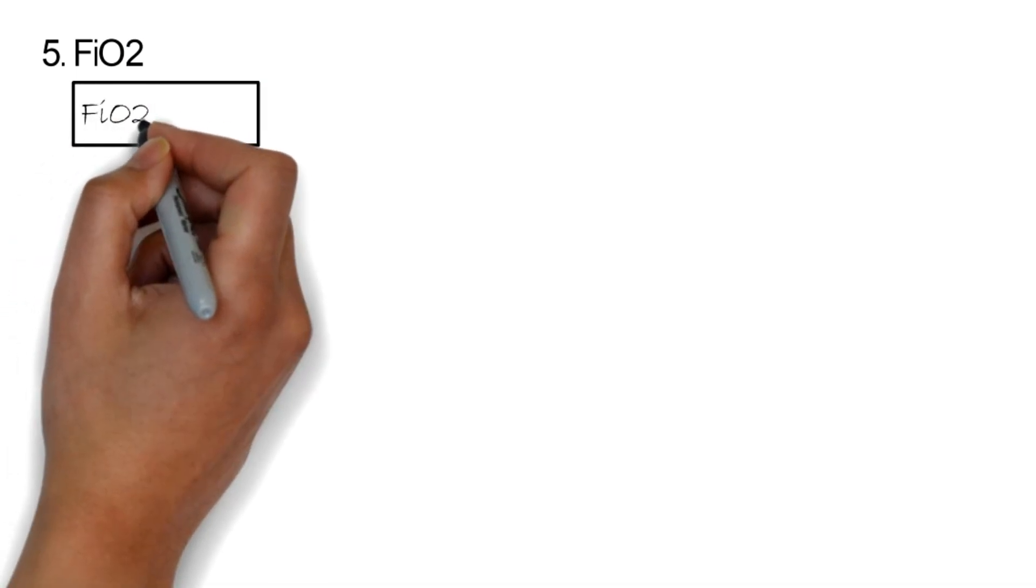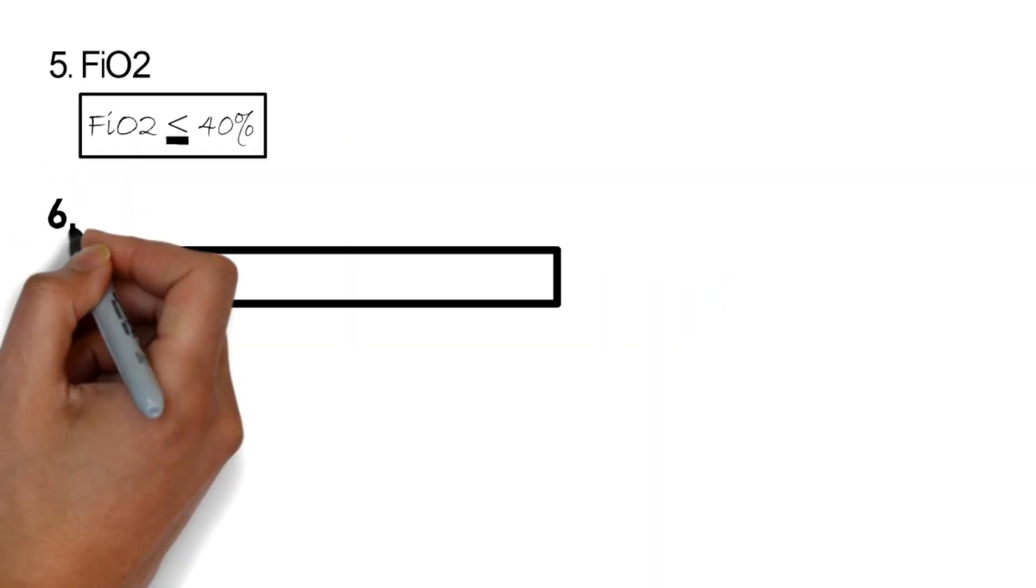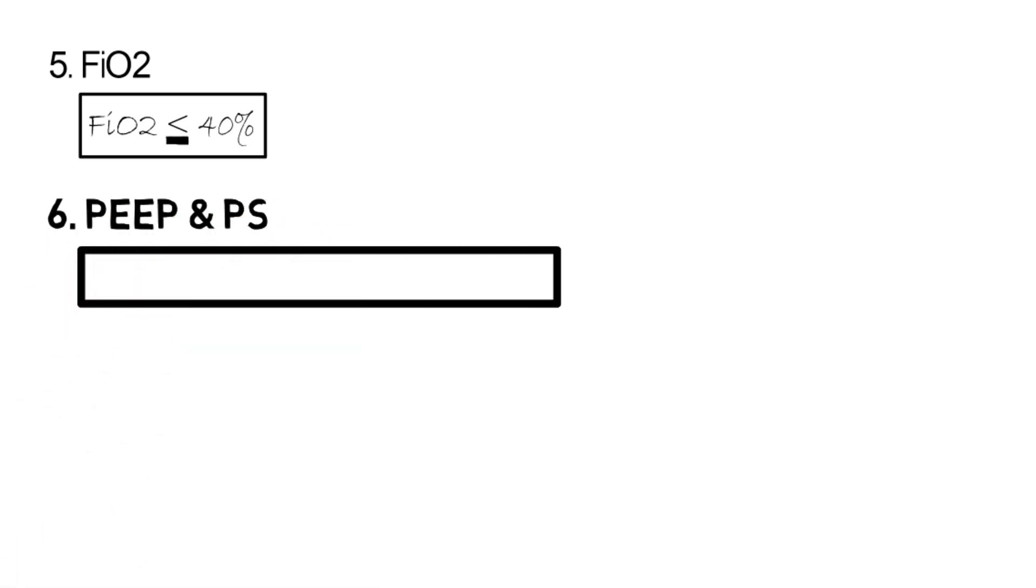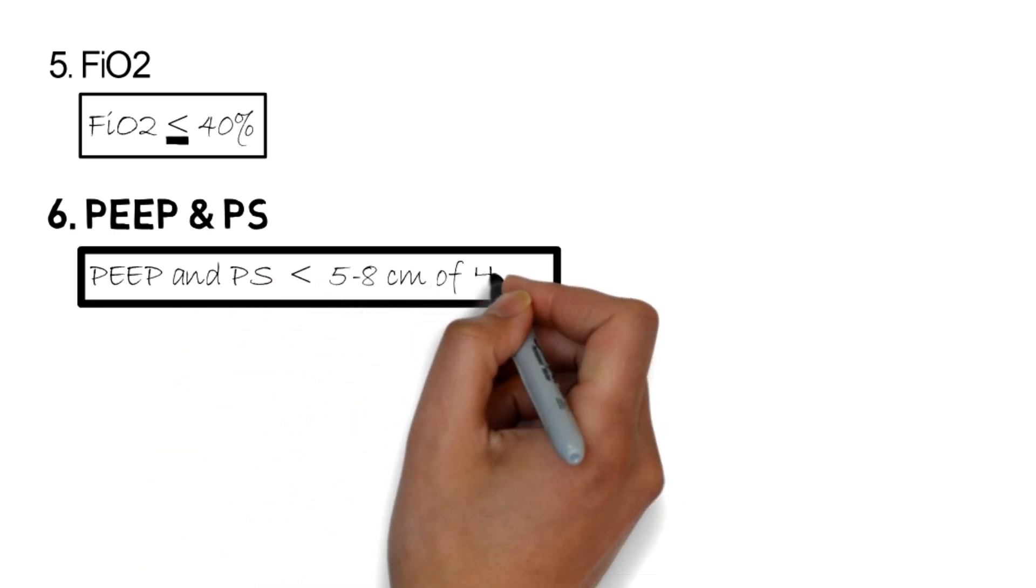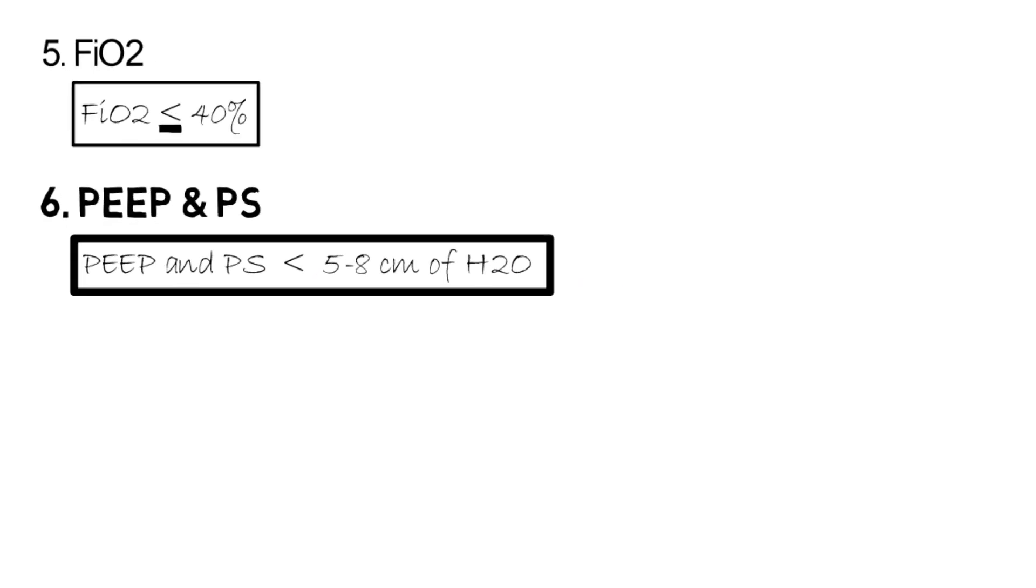Next is FiO2. To assess oxygenation status, patients should tolerate FiO2 of 30% or less. Similarly, for PIP and pressure support, patients should tolerate pressure support and PIP of 5-8 cm of water or less.